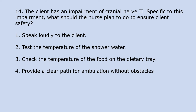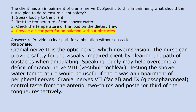A client has an impairment of cranial nerve 2. Specific to this impairment, what should the nurse plan to do to ensure client safety? 1. Speak loudly to the client. 2. Test the temperature of the shower or water. 3. Check the temperature of the food on the dietary tray. 4. Provide a clear path for ambulation without obstacles. Answer 4. Rationale: Cranial nerve 2 is the optic nerve, which governs vision. The nurse can provide safety for the visually impaired client by clearing the path of obstacles when ambulating. Speaking loudly may help overcome a deficit of cranial nerve 8 (vestibulocochlear). Testing shower water temperature would be useful for peripheral nerve impairment.